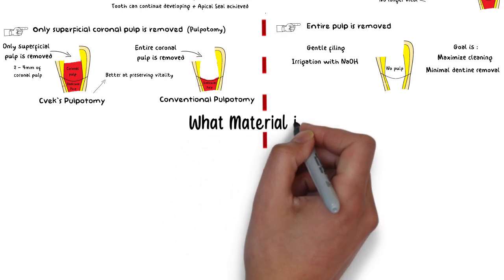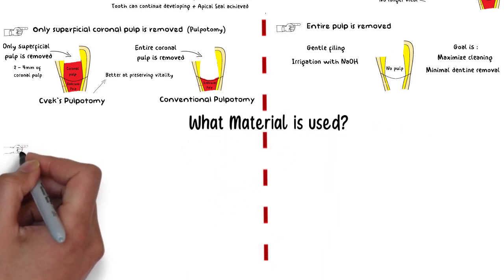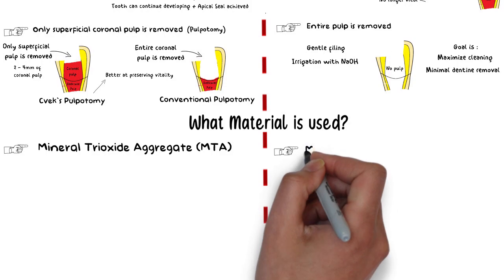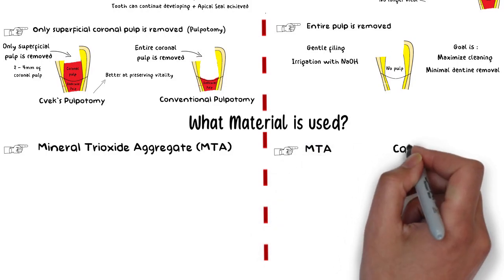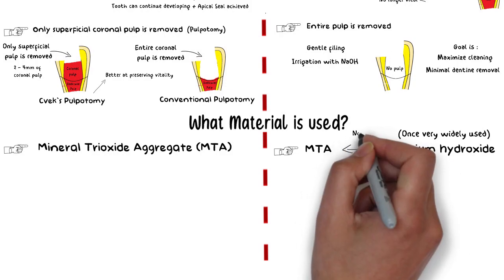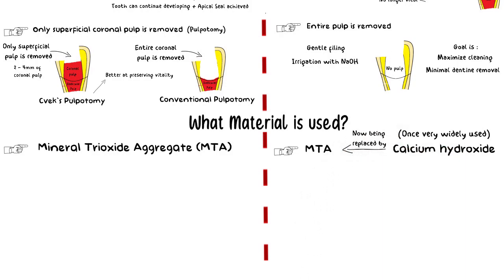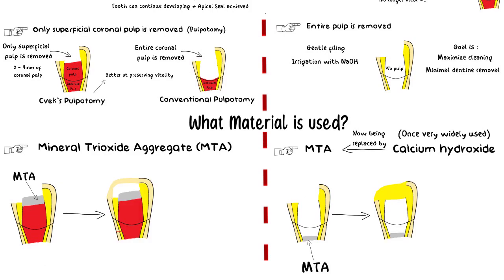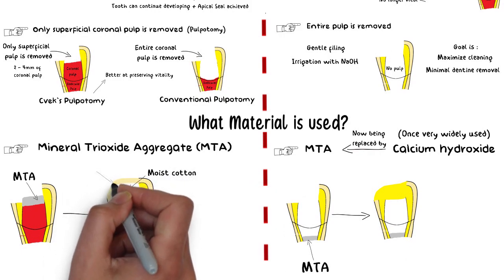Mineral trioxide aggregate, also known as MTA, is now becoming the most prominently and most widely used material for both Apexogenesis and Apexification, replacing the once famous calcium hydroxide. After the initial stages of the procedures, the MTA is introduced in the pulpal space. Since MTA sets in the presence of moisture, a moist cotton pellet is placed in the canal or the chamber and a well-sealed temporary restoration is placed.